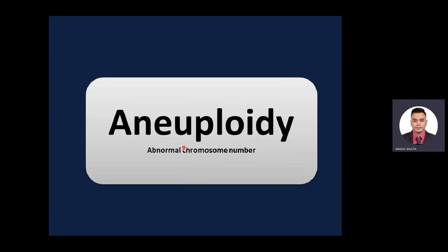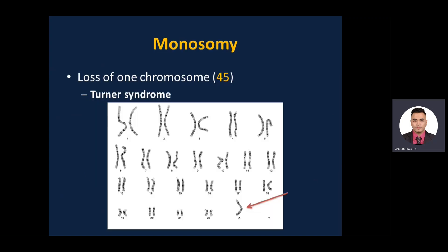Starting with abnormal chromosome number or aneuploidy: the first example is monosomy, which means loss of one chromosome — 45 instead of 46. An example is Turner syndrome, where you have just one X instead of two.